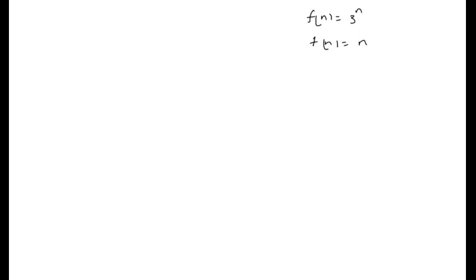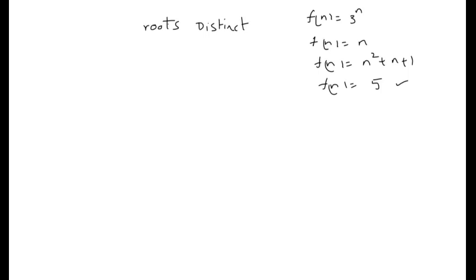If F(n) is in the format of 3^n, or if F(n) is a polynomial of degree 1, or F(n) is n² + n + 1 (polynomial of degree 2), or F(n) is a constant — these are the different cases for finding the particular solution. While calculating the homogeneous recurrence relation we get roots, and depending on whether roots are distinct, same, or matched with F(n), we handle the cases differently.